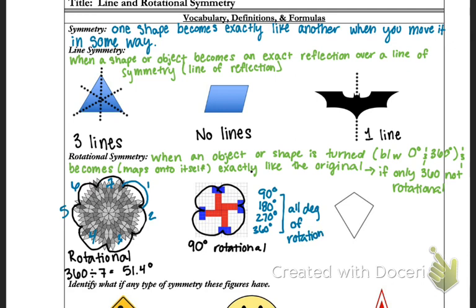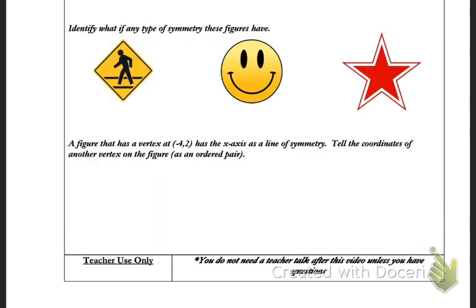And in our final example, we have no rotational symmetry. You would have to turn that kite all the way around before it lays on top of itself. So what we're going to do next is look at three examples to determine if there's any type of symmetry the figures have.